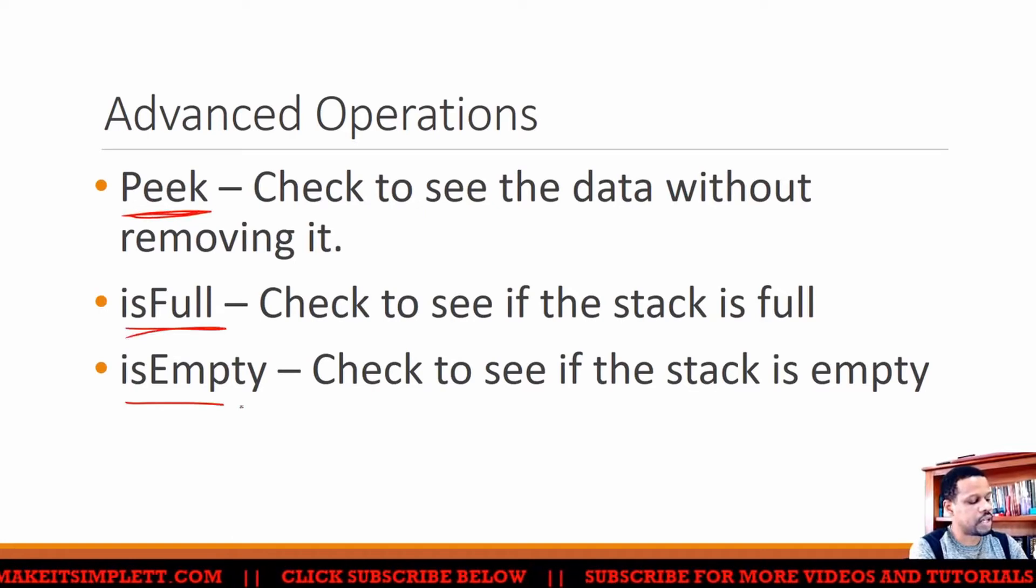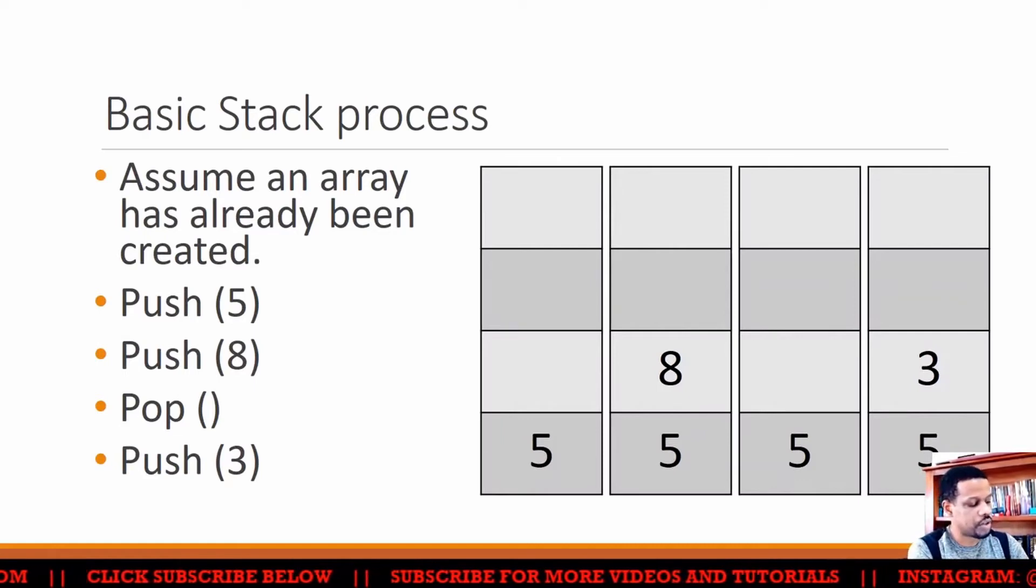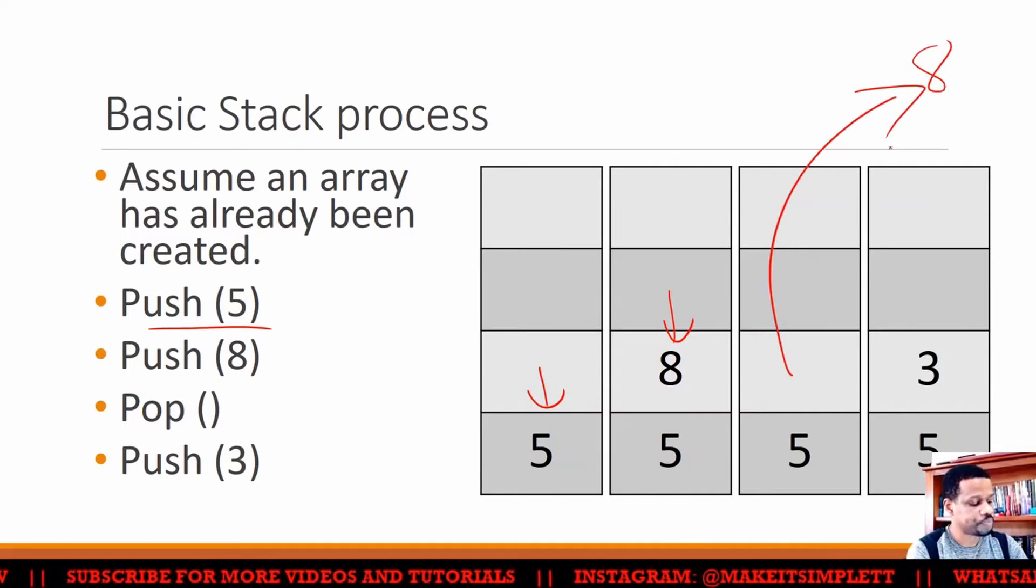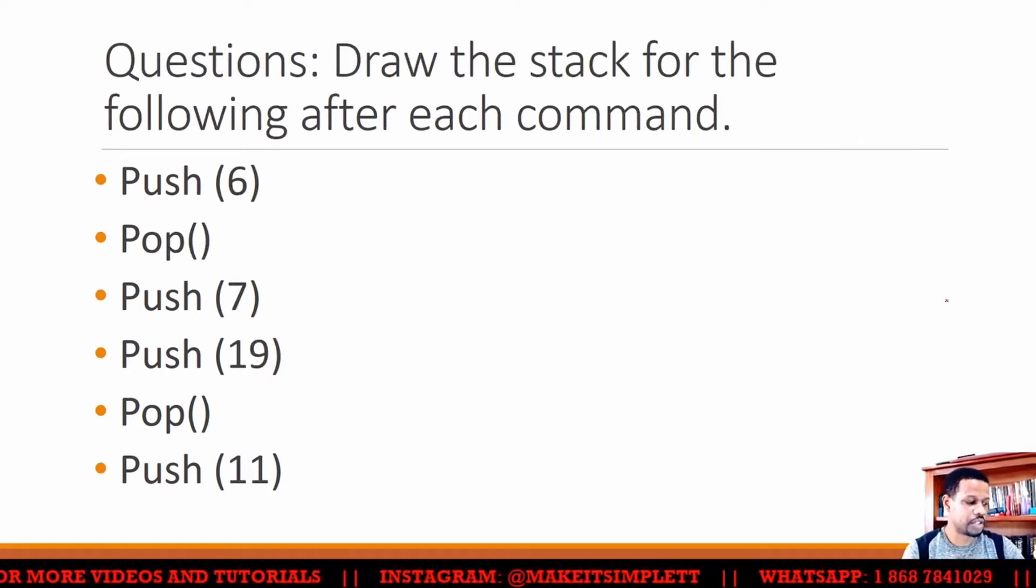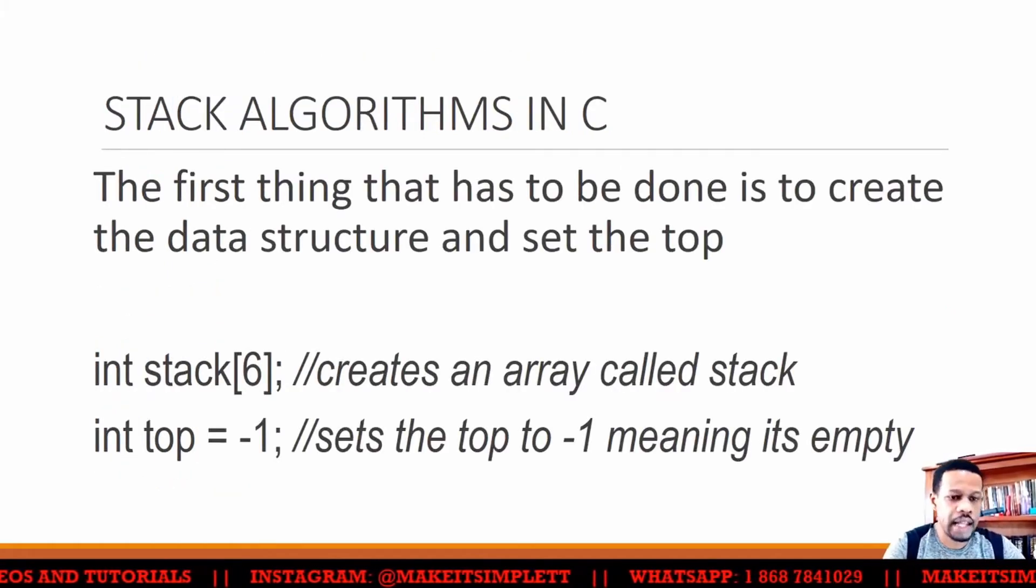So when you have an array that's been created and we want to create it like a stack, we push five. Five will go there. Push eight, eight will go there. We pop, and then the eight will come out because it will all come out from here. And then we push three, the three will go into there like that. Basic stack operations. So we won't do that, that's too simple. How do you write the algorithm for a stack?